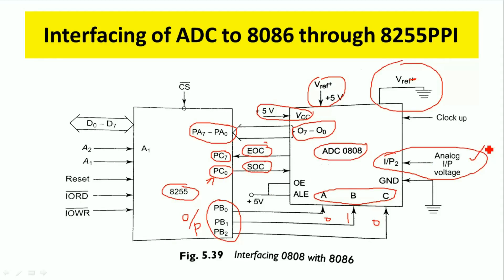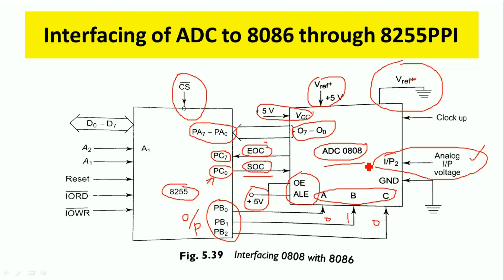For a given analog input voltage, we give the SOC signal from 8255 to ADC, and it starts converting analog to digital information. After conversion, ADC 0808 sends the EOC signal and an interrupt is generated at the 8086 microprocessor, which then reads the digital data through Port A. Chip select enables the 8255 PPI. Address latch enable and output enable are given to plus 5 volts to enable ADC 0808. Address lines A1 and A2 select the control word register, Port A, Port B, or Port C.